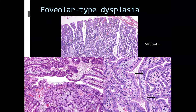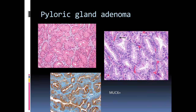Foveolar-type dysplasia is a slightly different and more subtle animal. It looks very much like foveolar cells with some basal orientation, but notice we start to see nuclear heterogeneity — a few macronuclei, a little crowding. These tend to be MUC5AC-positive on immunohistochemistry. You can see here this is a foveolar adenoma with foveolar-type dysplasia. Another adenoma without quite the same malignant risk is a pyloric gland adenoma — fairly typical pyloric-type glands with a little atypia, MUC6-positive, typically occurring in the pre-pyloric area.